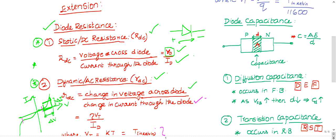A diode can act as a capacitor: it has p-type and n-type semiconductor materials, and the junction between them acts as an insulator — similar to an SiO₂ layer. The p and n regions act as conducting plates, and the junction acts as insulator between them. The capacitance formula is C = Aε/d, where A is the area and d is the distance between the plates.